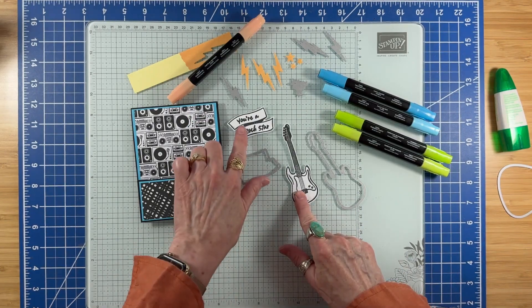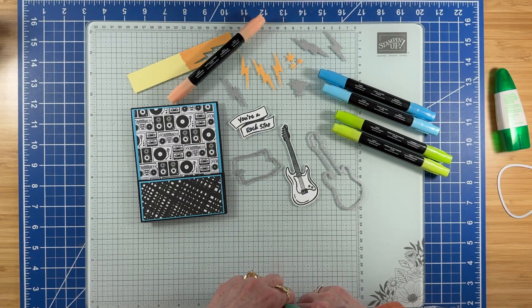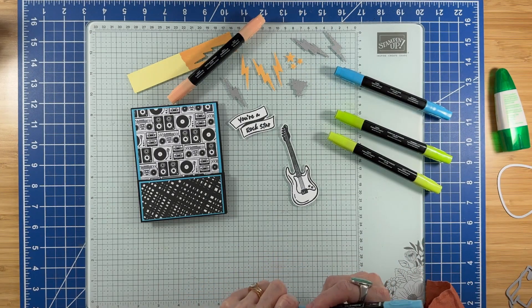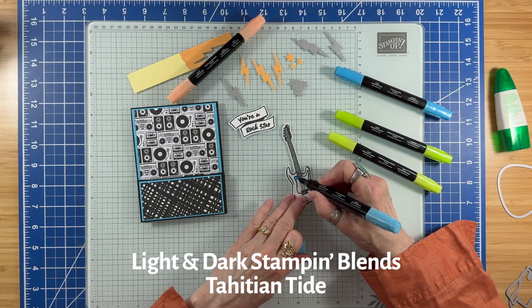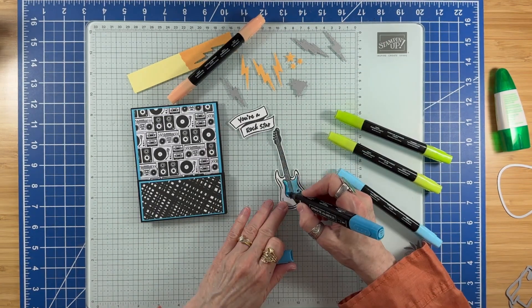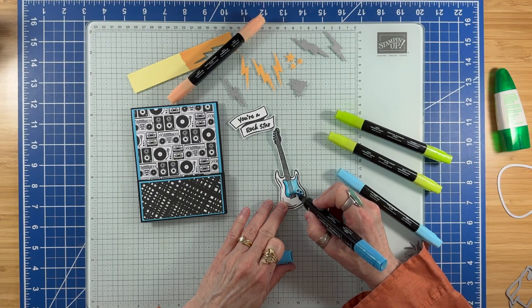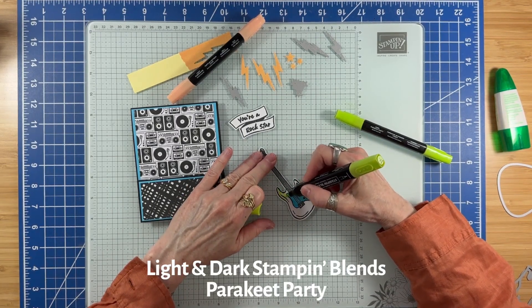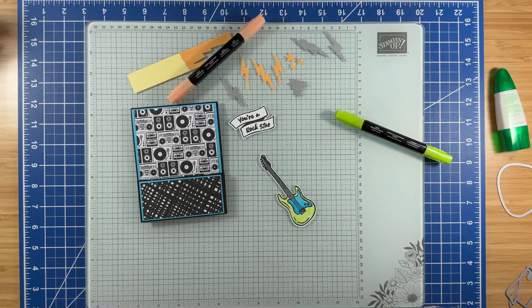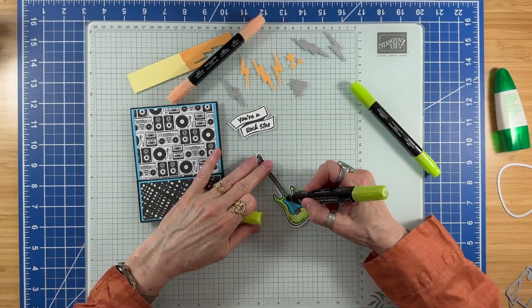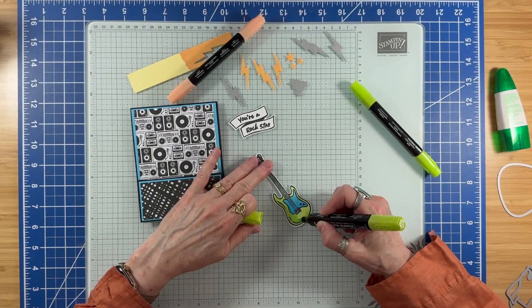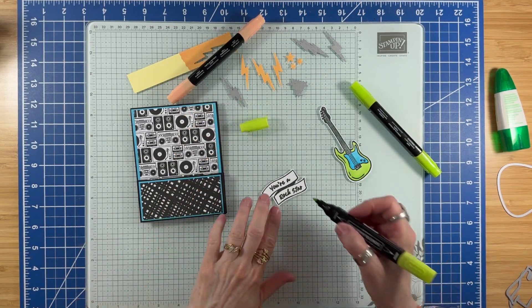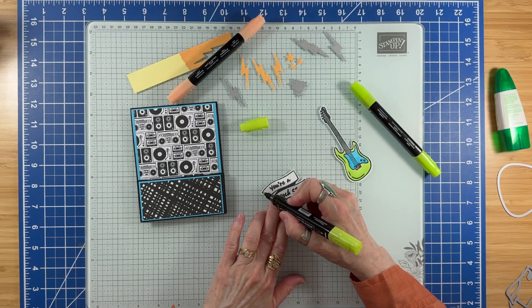I stamped the guitar image and sentiment from the Rockstar stamp set with Tuxedo Black Memento ink, and die cut those images out with the matching dies. Coloring the guitar with light Tahitian Tide, accented with dark Tahitian Tide, and using light parakeet party for the body and going back over it.